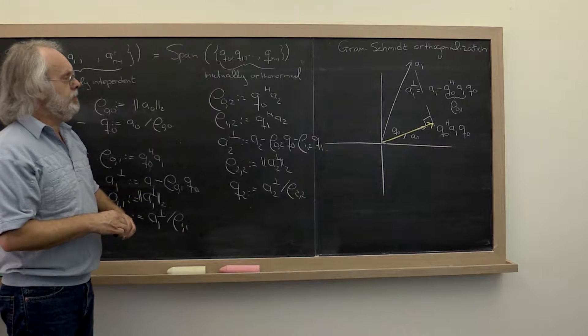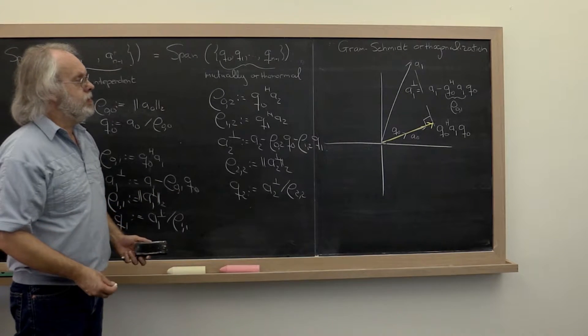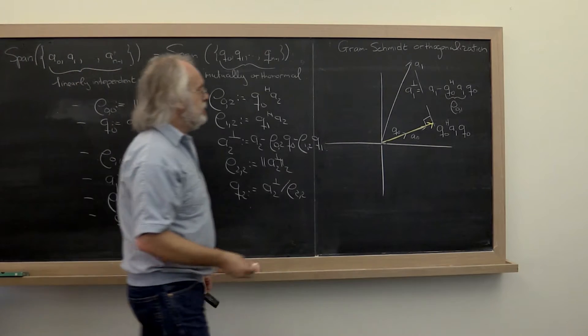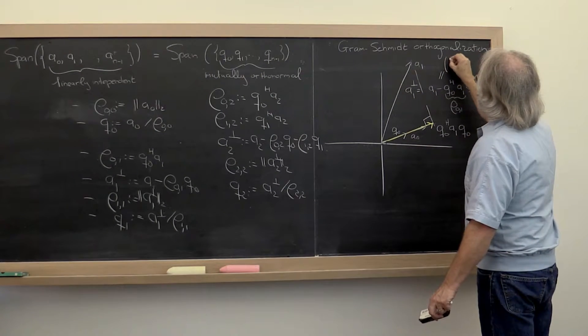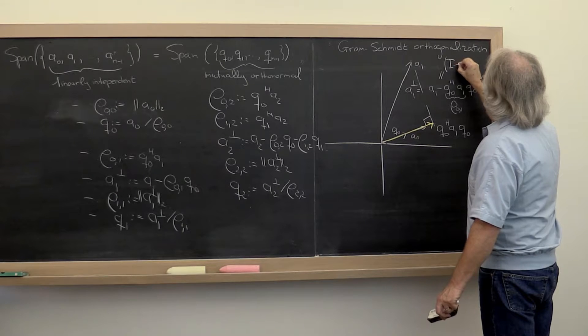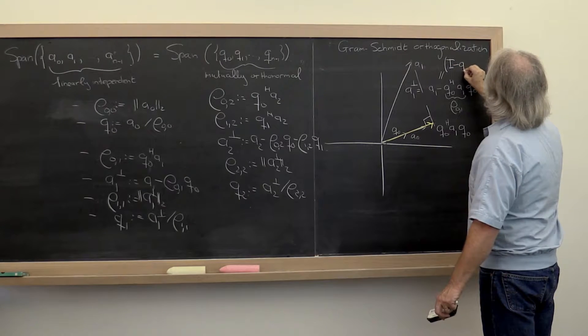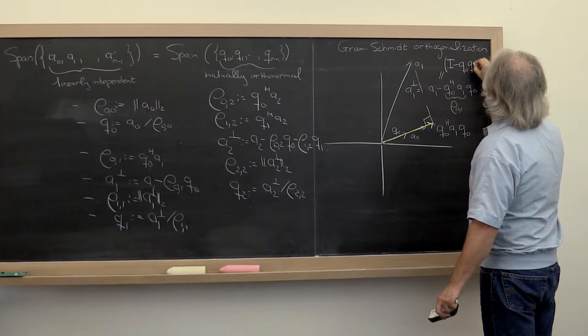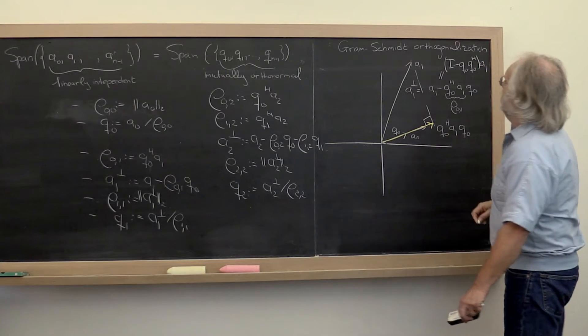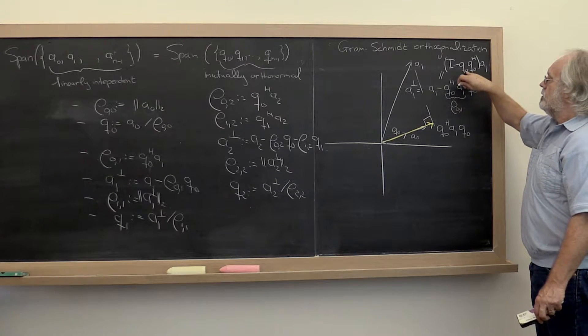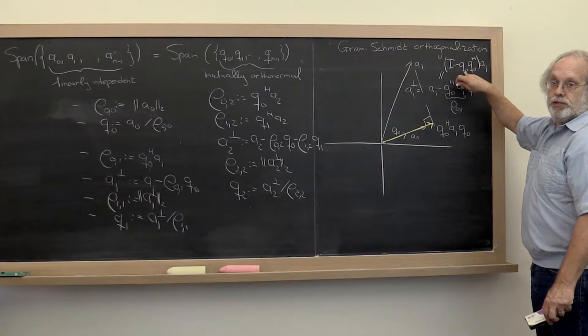Let's look at this a little differently. This formula right here we can actually write as the matrix I minus Q0, Q0, Hermitian transpose times the vector A1. This is the matrix that projects onto the space spanned by Q0.